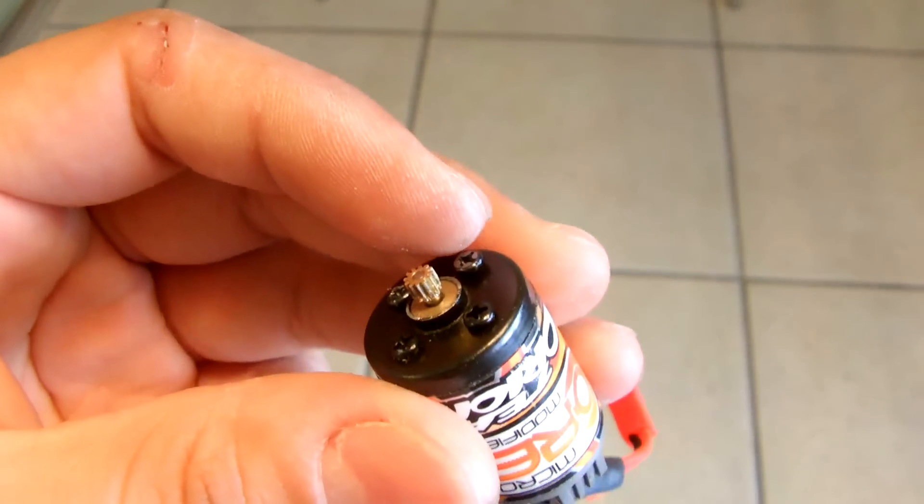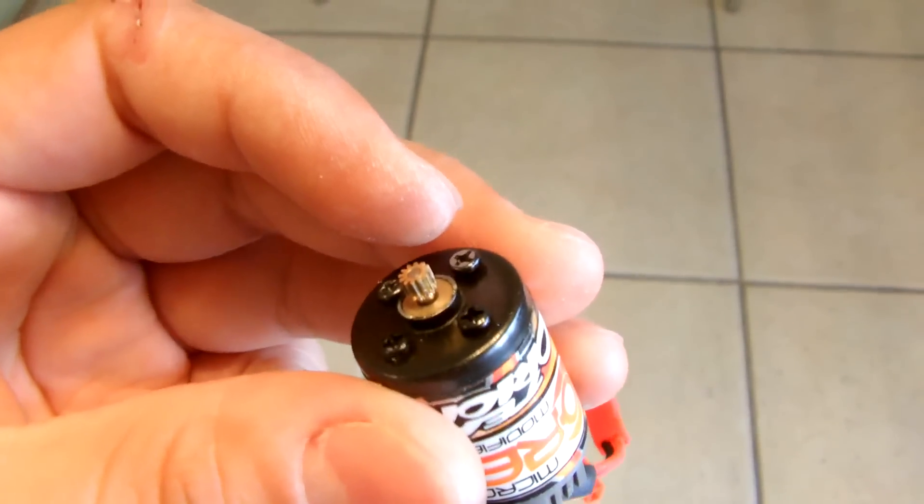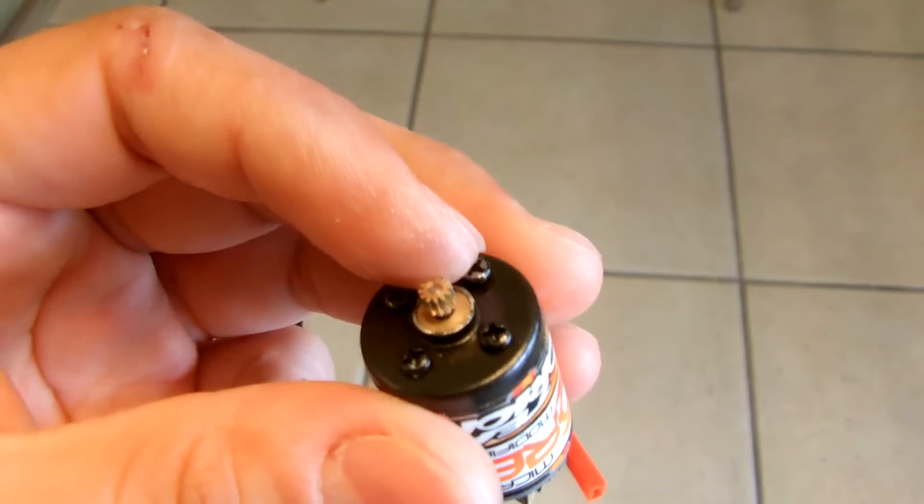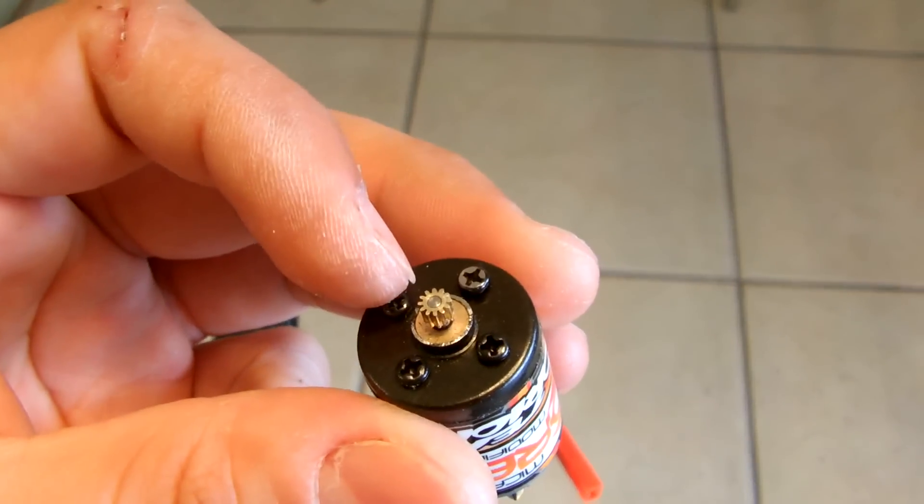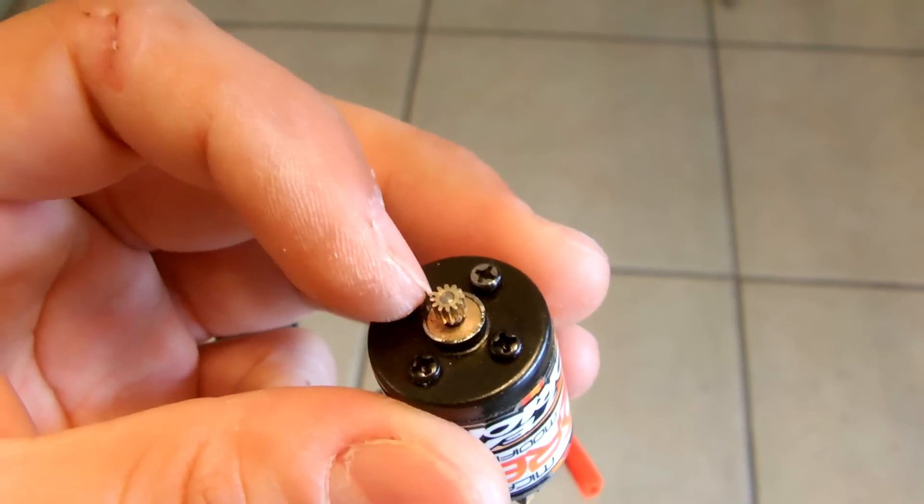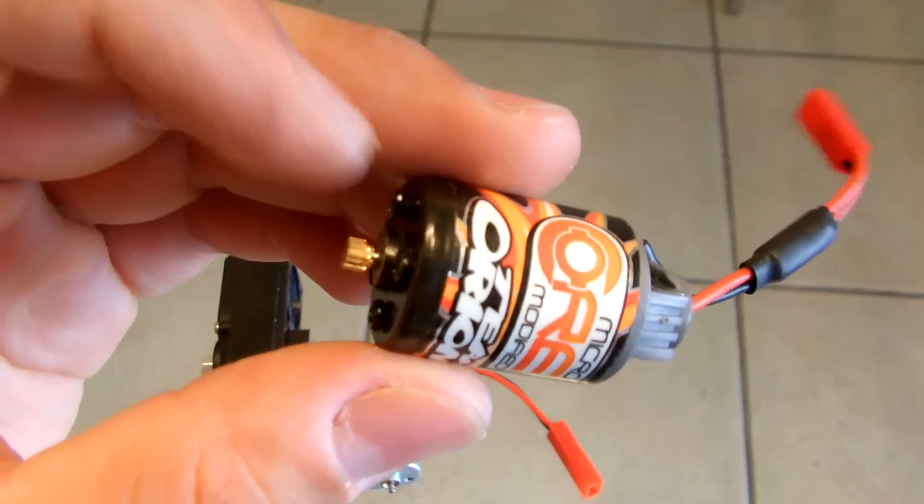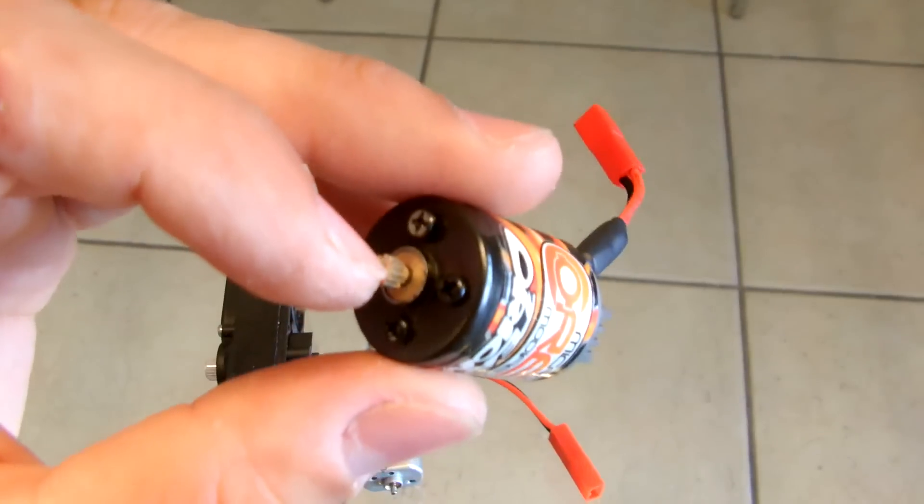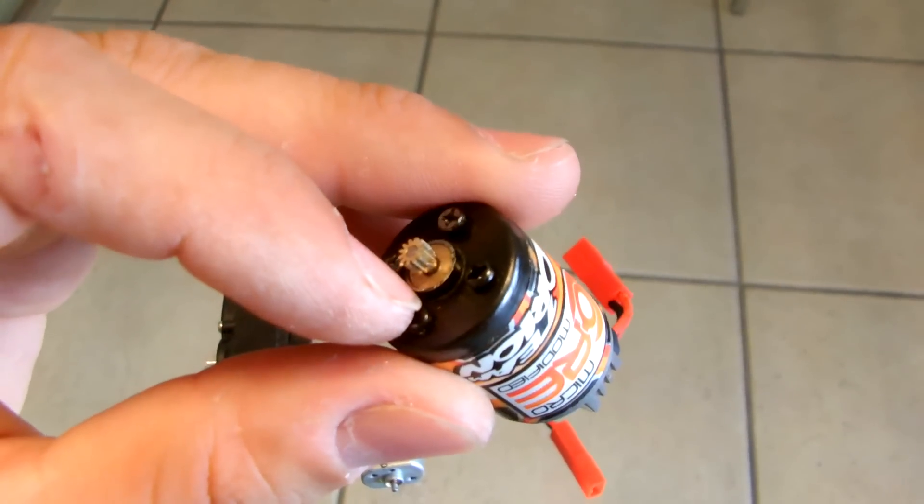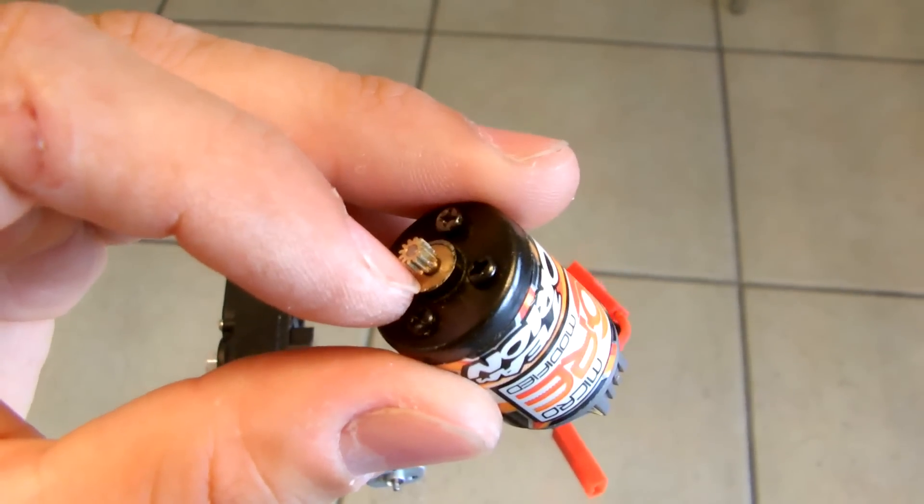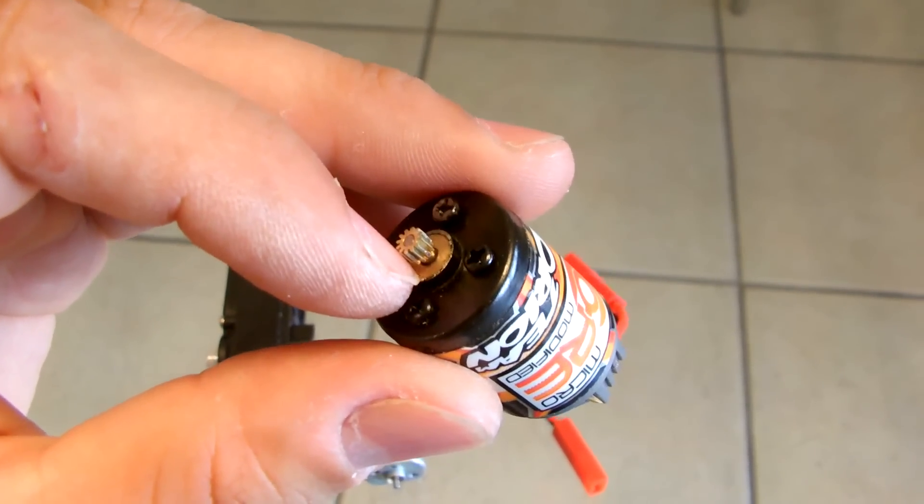Sorry about the focus, the lighting is not helping. So that pinion gear does not fit into this motor unless you grind down the shaft. Just throwing that out there in case you want to do something like this. Now this is not a ball bearing motor, even though it is a modified motor.